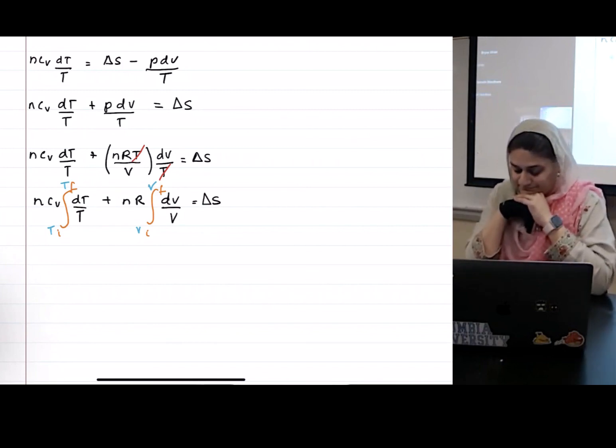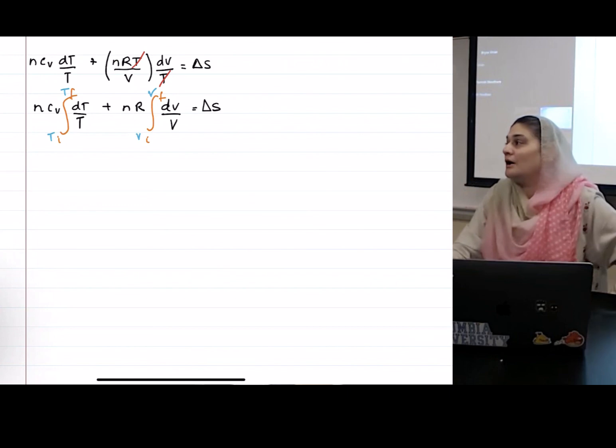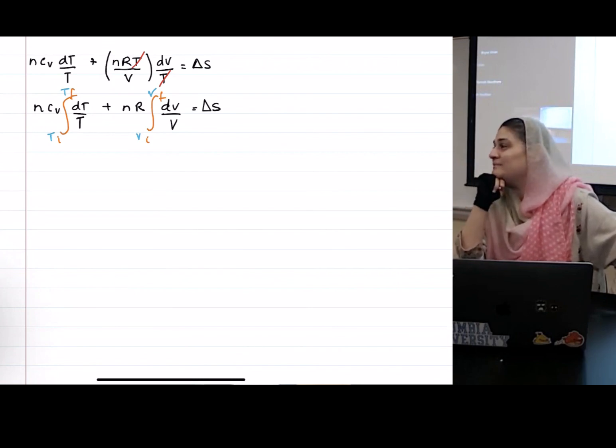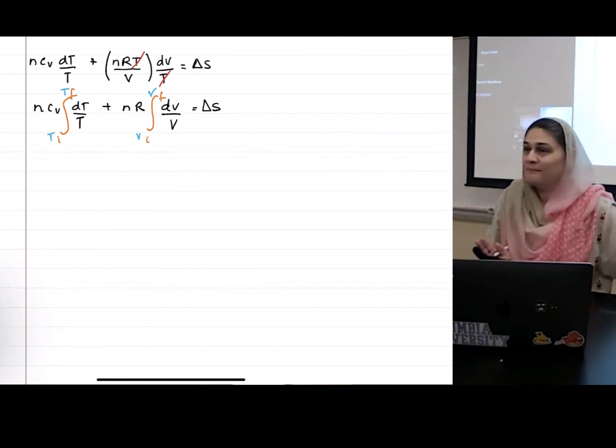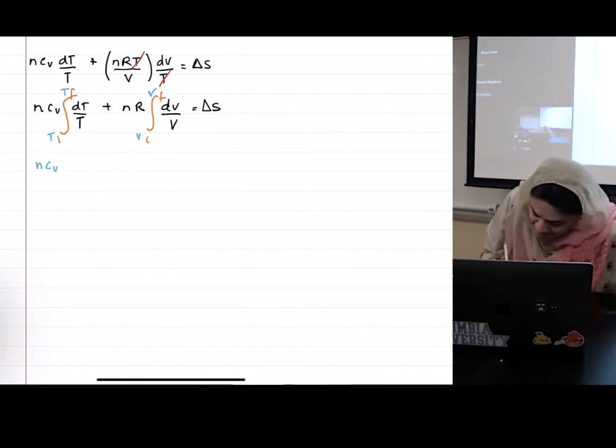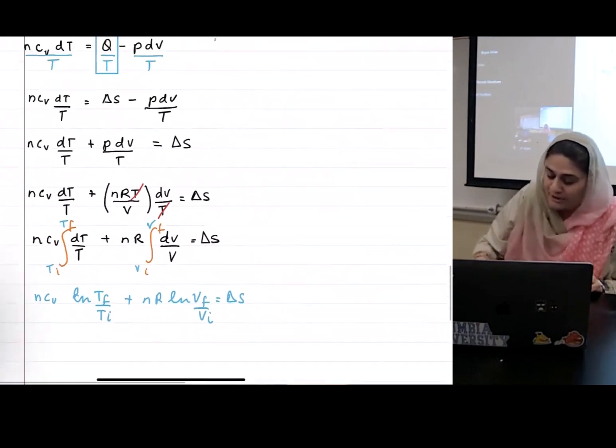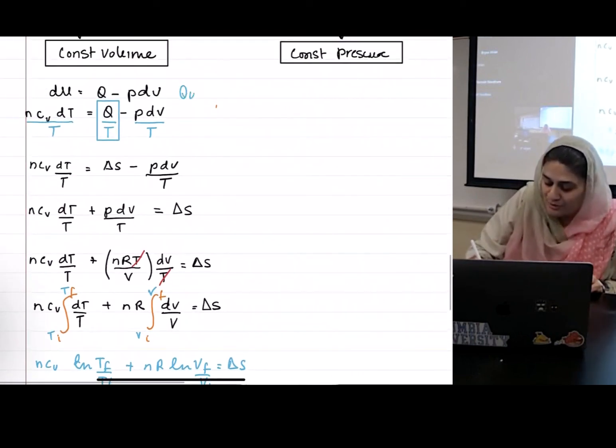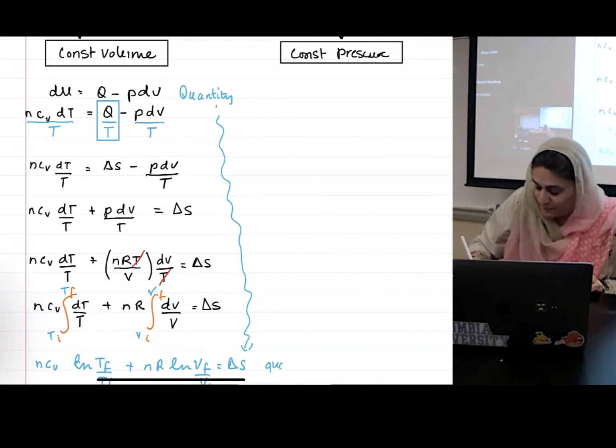What is integral of 1 over T? Log cabin. So, what is integral of 1 over T? Log T. Can I do this in one step? Is anybody going to freak out? Excellent. N C V log of T F over T I plus N R log of V F over V I equals delta S. So, you started from your quantity equation and you ended up with your quality equation. Woo-hoo!